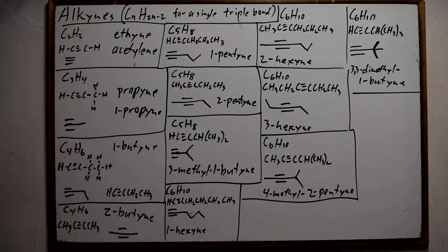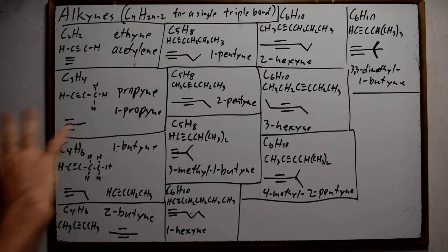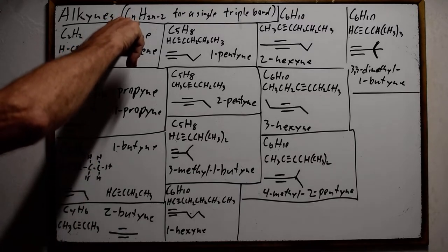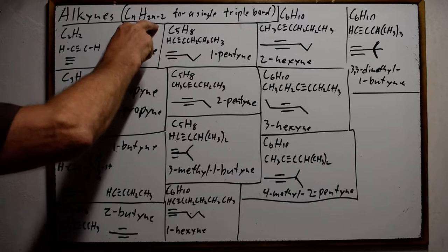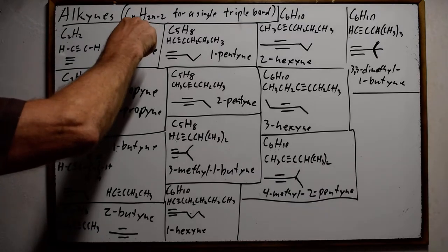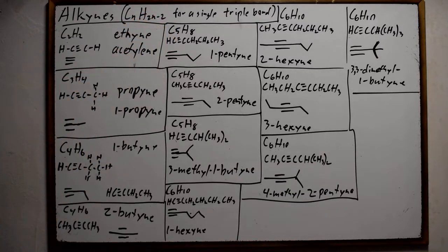We are now looking at alkynes. Alkynes have a triple bond, and in all these examples we only have a single triple bond. When we only have a single triple bond, the formula is going to be CnH2n-2. If we add a ring, a second triple bond, or a double bond, this formula will change.